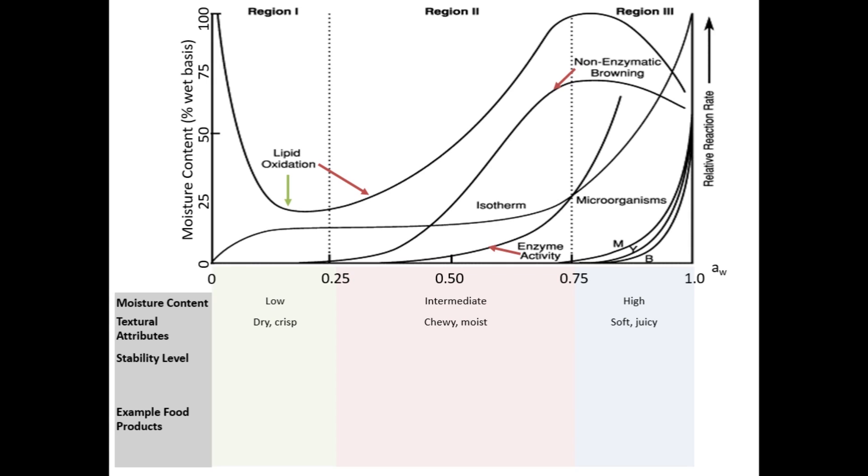However, in region 3, foods are susceptible to all factors discussed, including lipid oxidation, non-enzymatic browning, enzyme activity, and microbial growth. Consequently, foods in region 1 have high stability or long shelf lives, foods in region 2 have intermediate stability or intermediate shelf lives, and fresh foods in region 3 have low stability or short shelf lives.